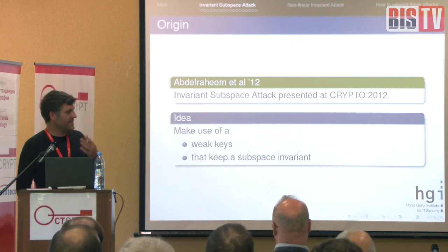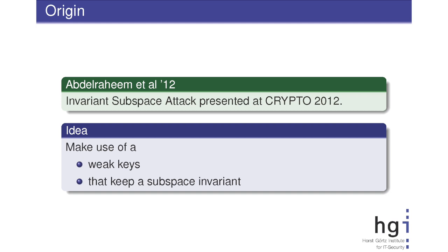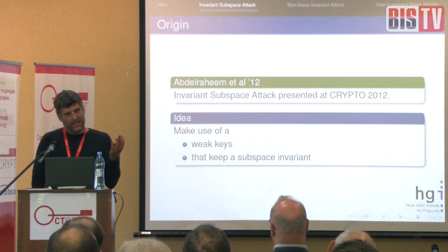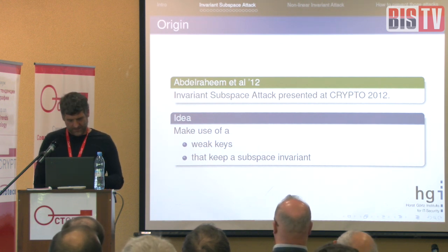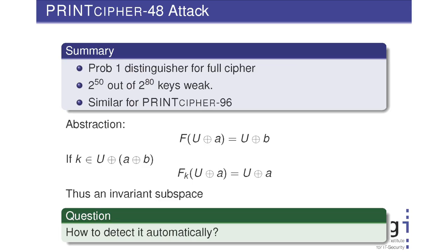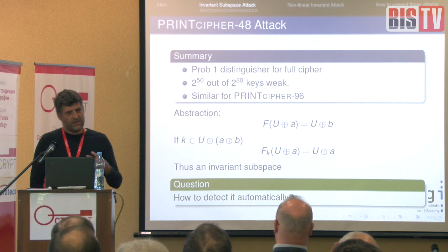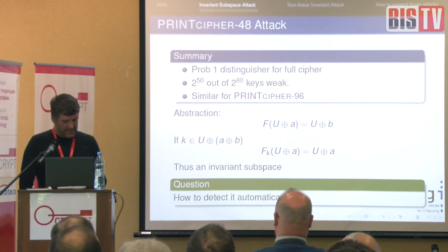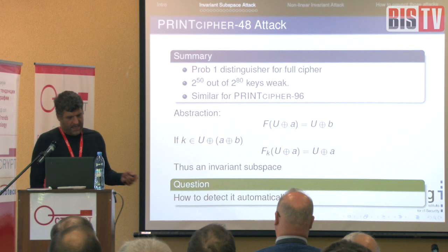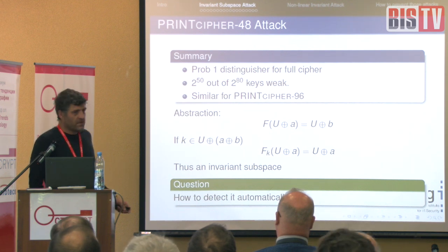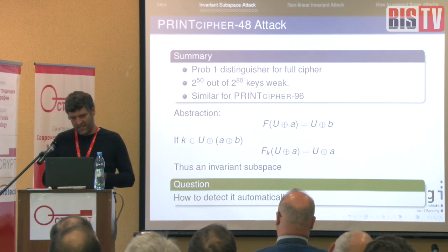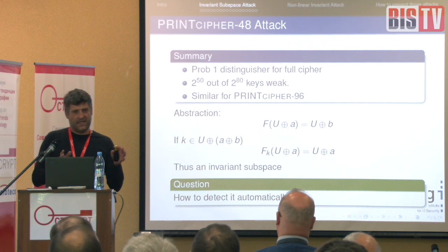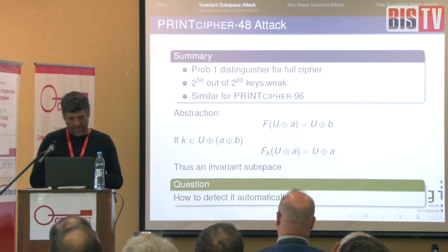This idea of symmetries and the abstraction with subspaces was first introduced in 2012. It makes use of weak keys that keep subspaces invariant. For PRINT cipher this resulted in a probability-one distinguisher for the full cipher. For PRINT cipher you have 2^50 out of 2^80 keys that are weak, which is significant. The abstraction: if f is the round function, all rounds are the same, u is a subspace and a is a constant, then the affine subspace u+a is mapped to u+b—a different coset of the same subspace. If the key is in u+a+b, then u+a is mapped to itself, and if all round keys are identical, this repeats for all rounds and the cipher is broken.